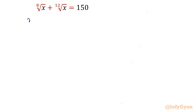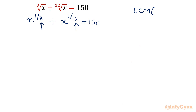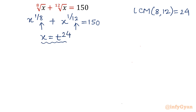I will write our equation as x power 1 over 8 plus x power 1 over 12 equal to 150. Now whatever we have in the denominator of the exponent, let us find out the LCM. This is a standard rule — in fractional powers, whatever is in the denominator, find out the LCM. If it is 8 and 12, then you will have 24. Then the substitution would be x equal to t raised to the power LCM, so t raised to the power 24. This is our substitution.